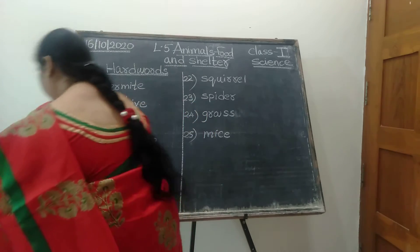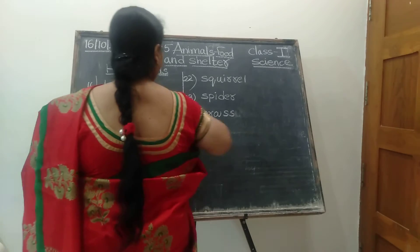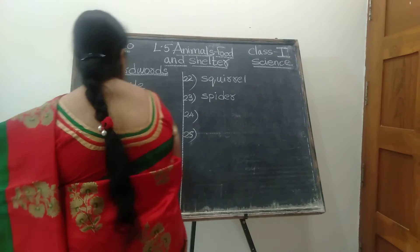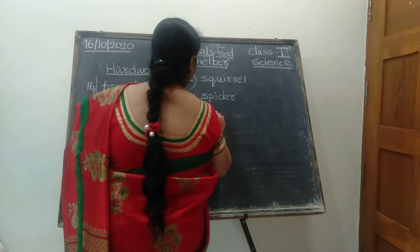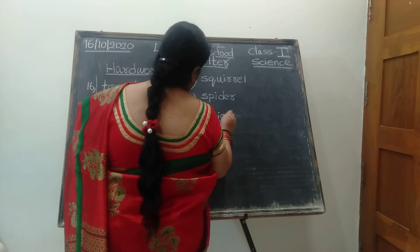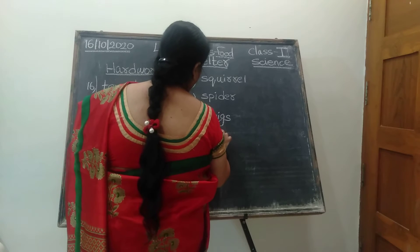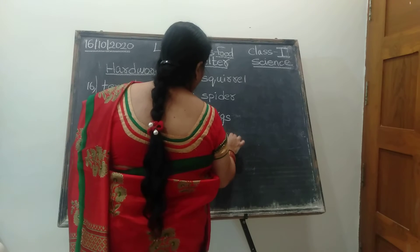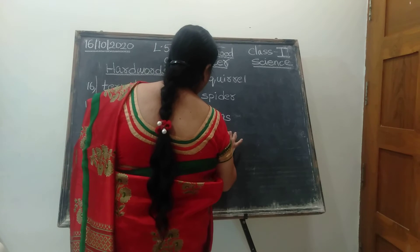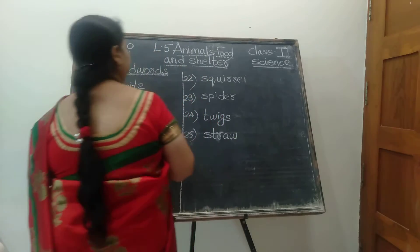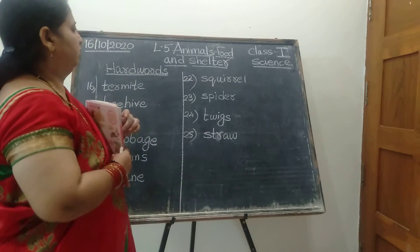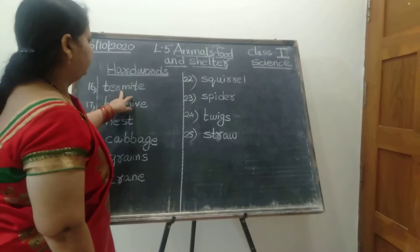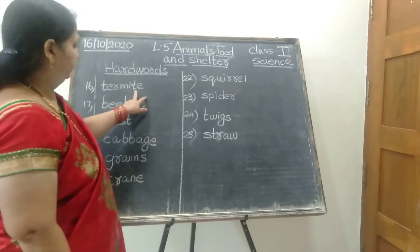Instead of grass, you can write twigs. Mice — here also we will change. Twigs and straw you can write. Spell the word of twigs and straw. Those two things are used to build a nest — twigs and straw. Now listen children: spell the word termite — T-E-R-M-I-T-E, termite.